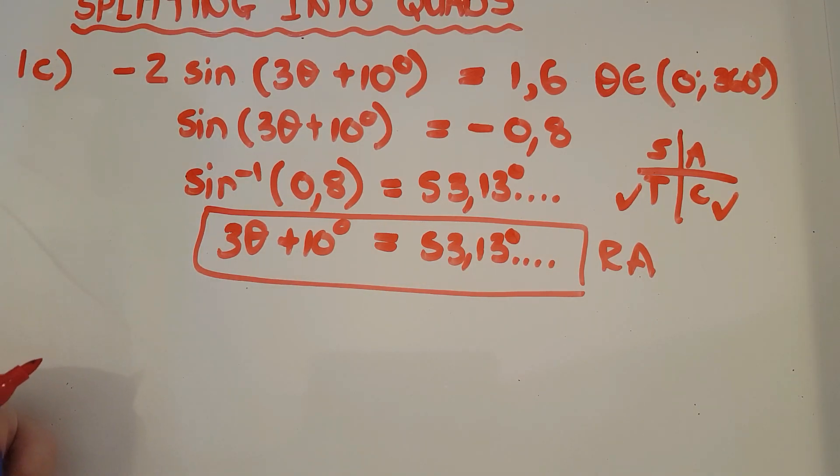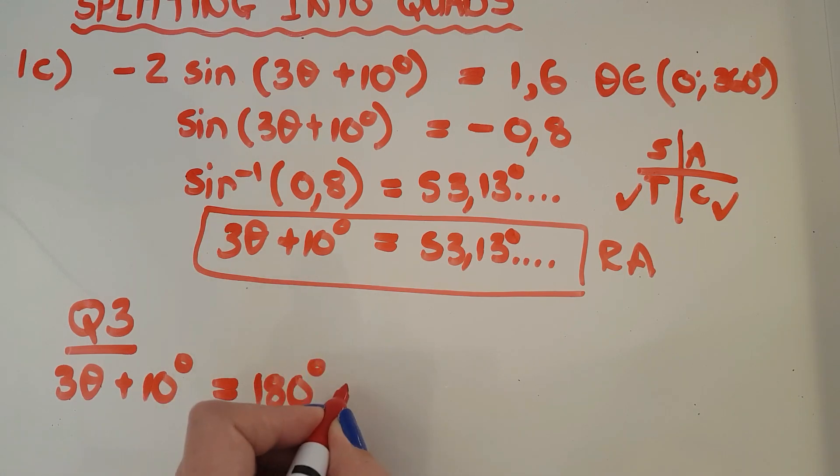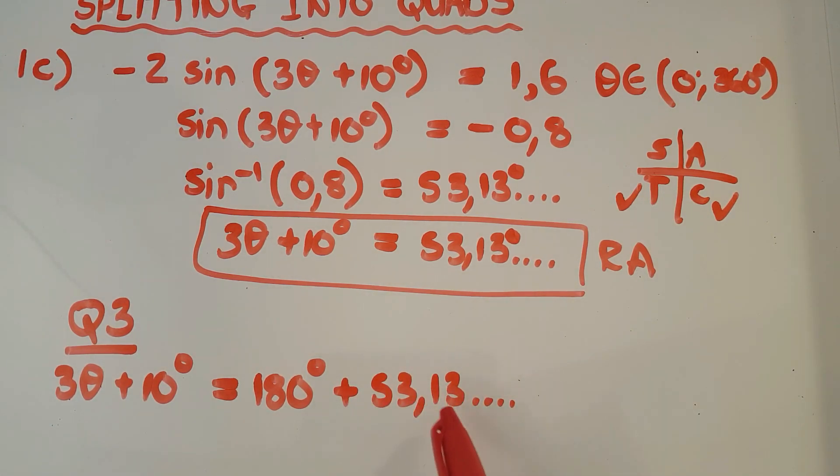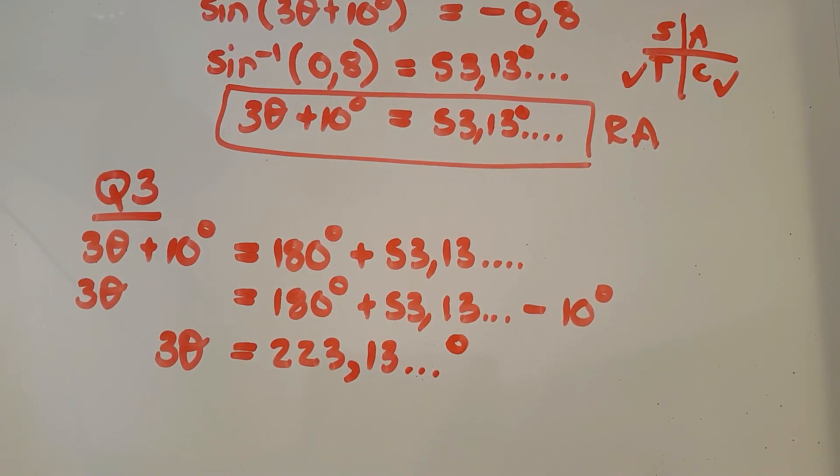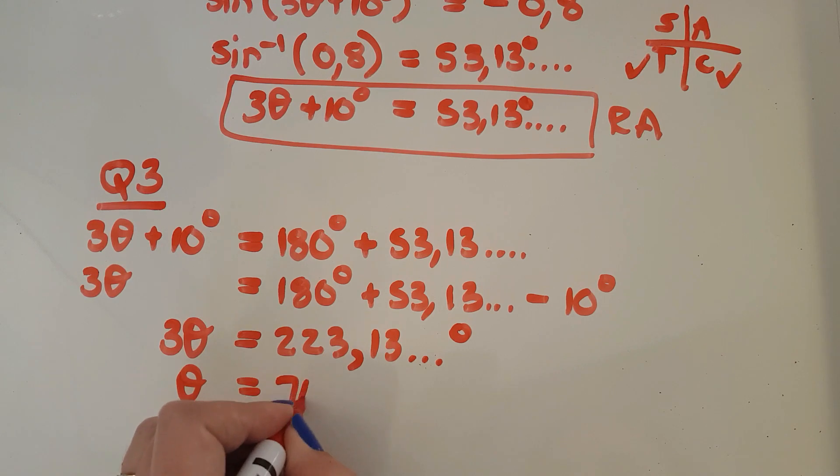So in quad 3, I've got 3 theta plus 10 degrees. And in quad 3, I'm supposed to go 180 plus my reference angle. So it's 180 degrees plus my 53.13. Keep that answer in your calculator and then just use the answer button to get it back. Now I can solve. So now I can say 3 theta equals, let's move the 10 across, 180 plus the 53 minus 10 degrees. When I add those numbers up and subtract them, I get 223.13 with all the other decimal points. And then I'm going to divide by 3. And I'm going to get out 74.38 degrees once I've rounded off.